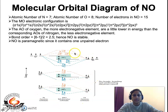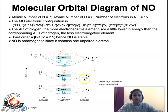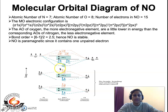Let us draw the molecular orbital diagram. The 1s atomic orbital of nitrogen overlaps with the 1s of oxygen to give sigma 1s and sigma star 1s. Similarly, the 2s of nitrogen overlaps with the 2s of oxygen to give sigma 2s and sigma star 2s. The 2p orbitals of nitrogen overlap with the 2p of oxygen to give 6 molecular orbitals: sigma 2px, pi 2py, pi 2pz, pi star 2py, pi star 2pz, and sigma star 2px.